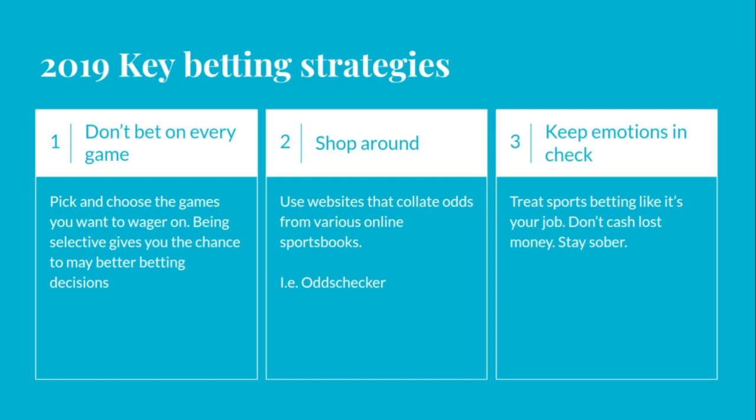Strategy number two: shop around. Find websites — I've put Odds Checker here because that's one I like to use — that collate the odds and tell you which sportsbooks give you the best value for a certain bet. You want to shop around and find the best odds for the games you're going to wager on, because sportsbooks are competing for your business. Find those more generous odds that sportsbooks offer to attract more bettors.